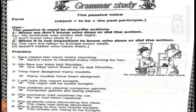Number three: 'They have designed many models.' Object: 'many models.' Verb: 'have designed' — present perfect — use have/has + been + past participle. 'Many models have been designed.' Number four: 'I will type this report tonight.' 'Will type' — future — passive: will be + past participle. 'This report will be typed tonight.' Number five: 'The children are playing computer games.' 'Are playing' — present continuous — passive: am/is/are + being + past participle. 'Computer games are being played.'